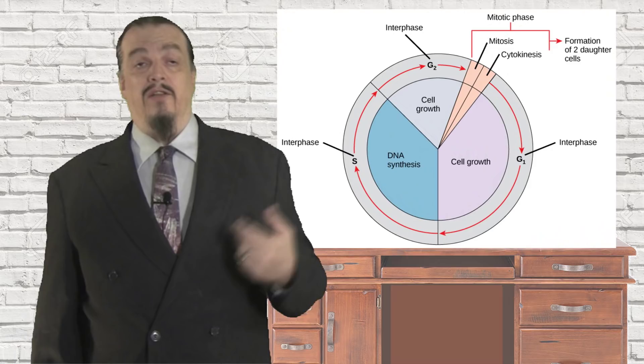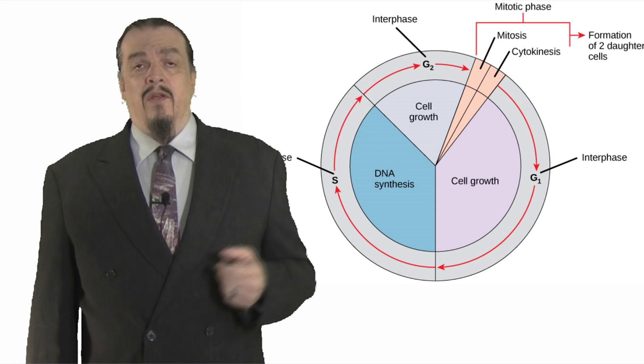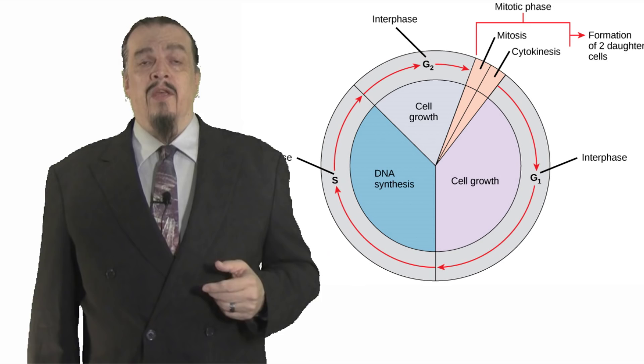The G stands for GAP. During G1, the first phase of interphase, the cell does most of its growing. The cell grows in size and synthesizes its organelles and proteins. Also, RNA is produced. Next is the S phase, which stands for synthesis. What the cell synthesizes in this phase is all the important instructions for the cell — DNA. By the end of S phase, chromosomes are duplicated, so there is a totally new copy of the cell's DNA.